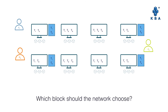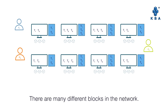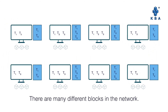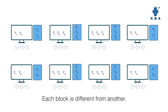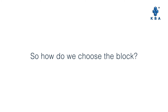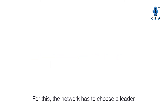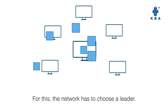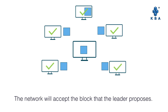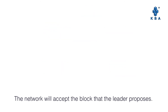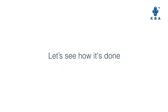Now the dilemma is: which block should the network choose? There are many different blocks in the network and each block is different from another. So how do we choose the block? For this, the network has to choose a leader. The network will accept the block that the leader proposes. Let's see how it's done.